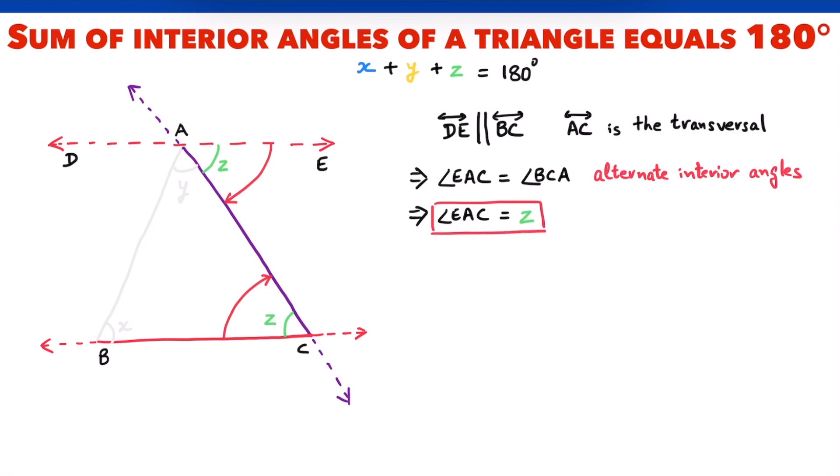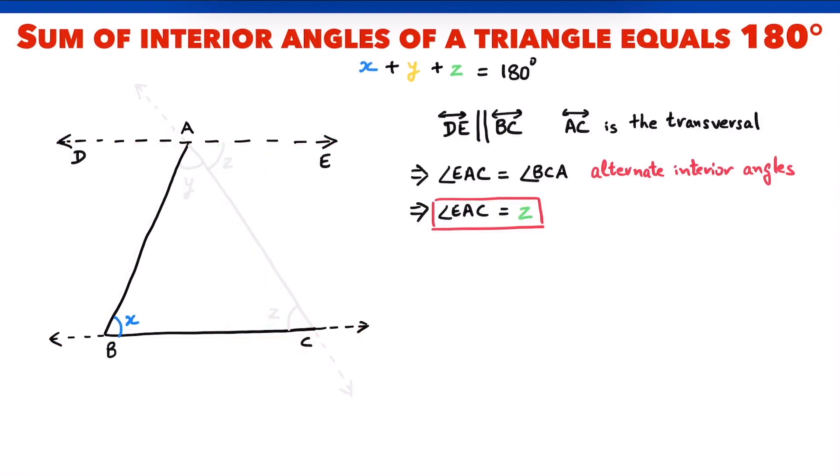Let me clean things up and move further. Focus again on parallel lines DE and BC. BA is also a transversal that intersects these two lines.